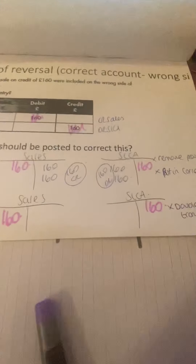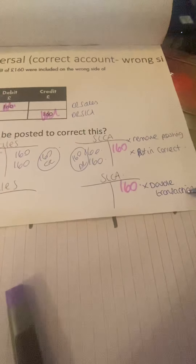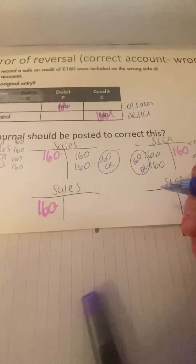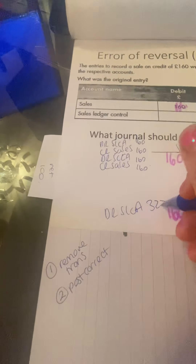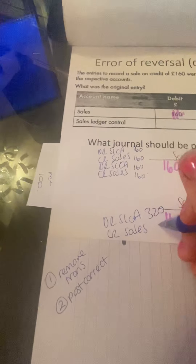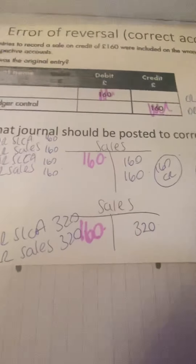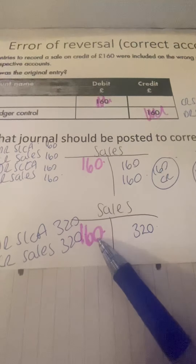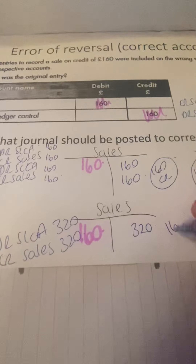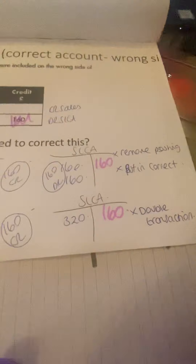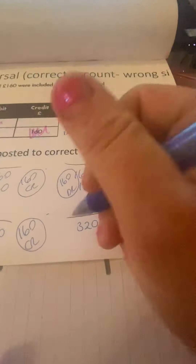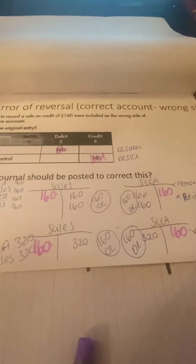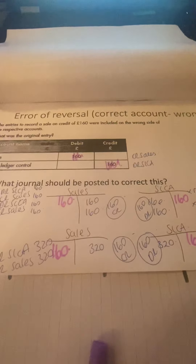The other way we could have corrected it, if it's a reversal, is to do a double transaction. So we would have debited the sales ledger control account with £320, credited sales with £320. If you were to look at this T account now, you've got £160 on the debit side and £320 on the credit side, so overall it has £160 on the credit side. This one has got £320 on the debit side and £160 on the credit side, so overall it has £160 on the debit side. So no matter which way you used, you've ended up with the same effect.